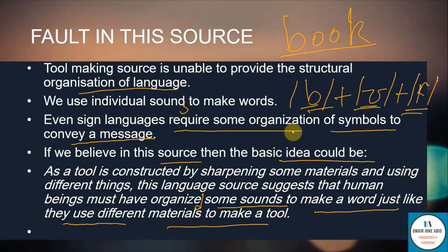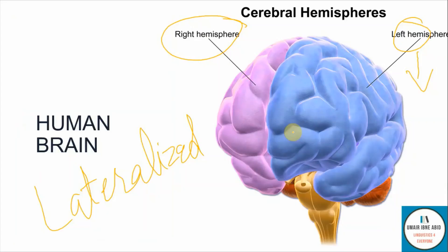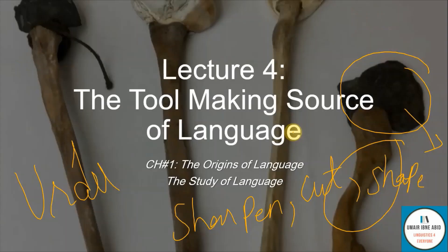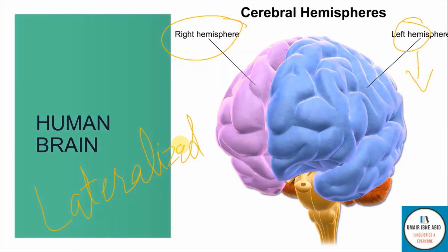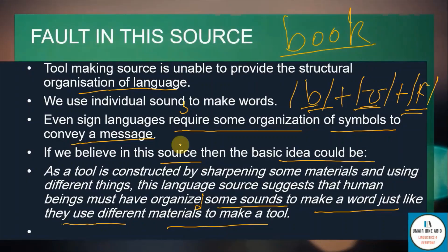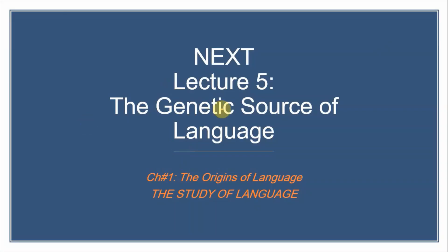If we believe that the tool-making source is the origin of language, just like other sources this source also does not have much evidence that it is true. This is all about the tool-making source, and in the next lecture we will look at the genetic source of language.